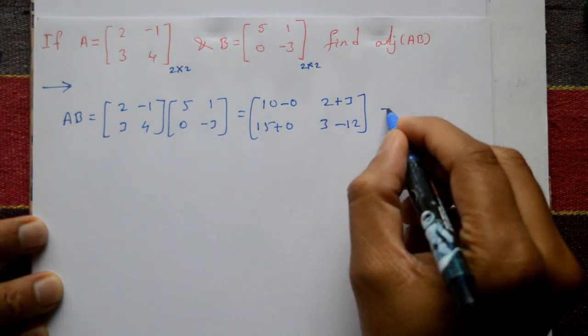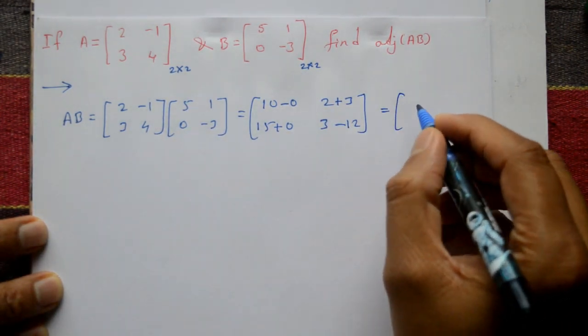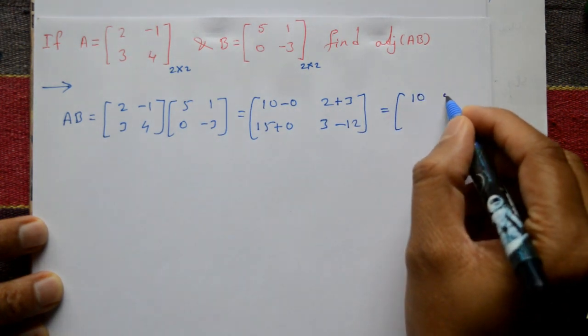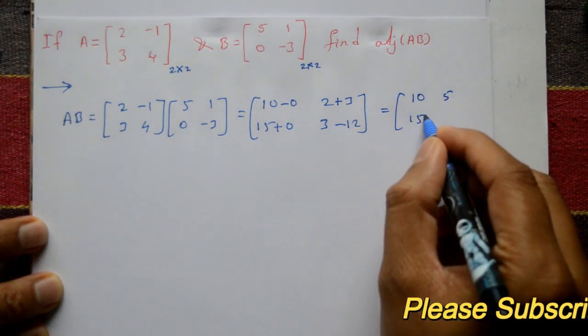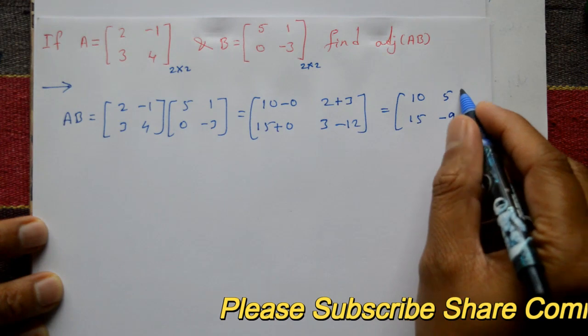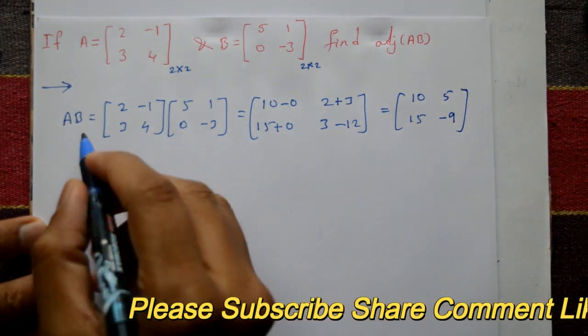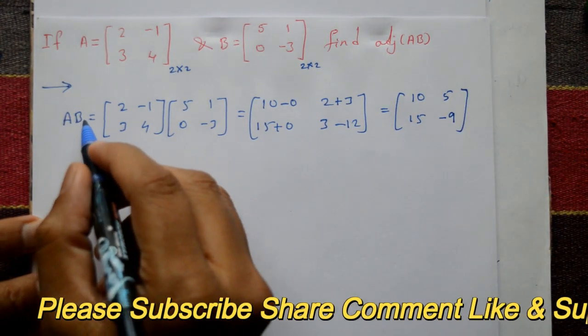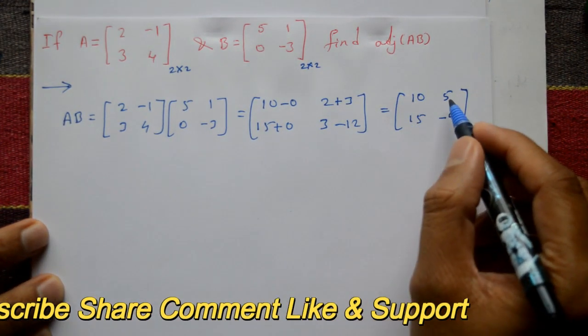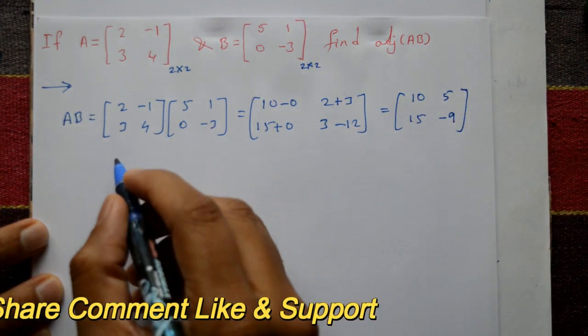So A into B gives us the matrix: 10, 5, 15, minus 9.